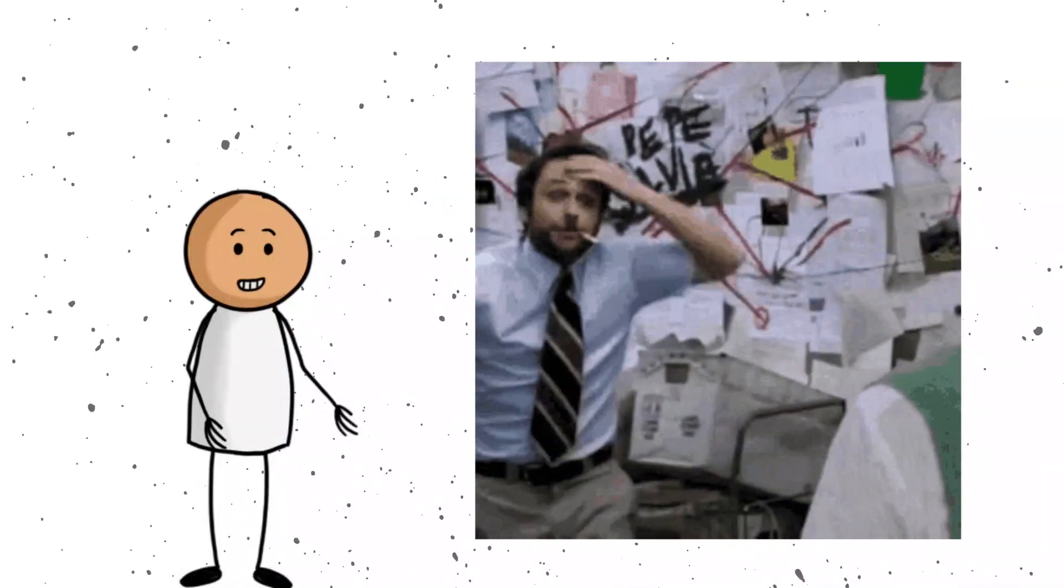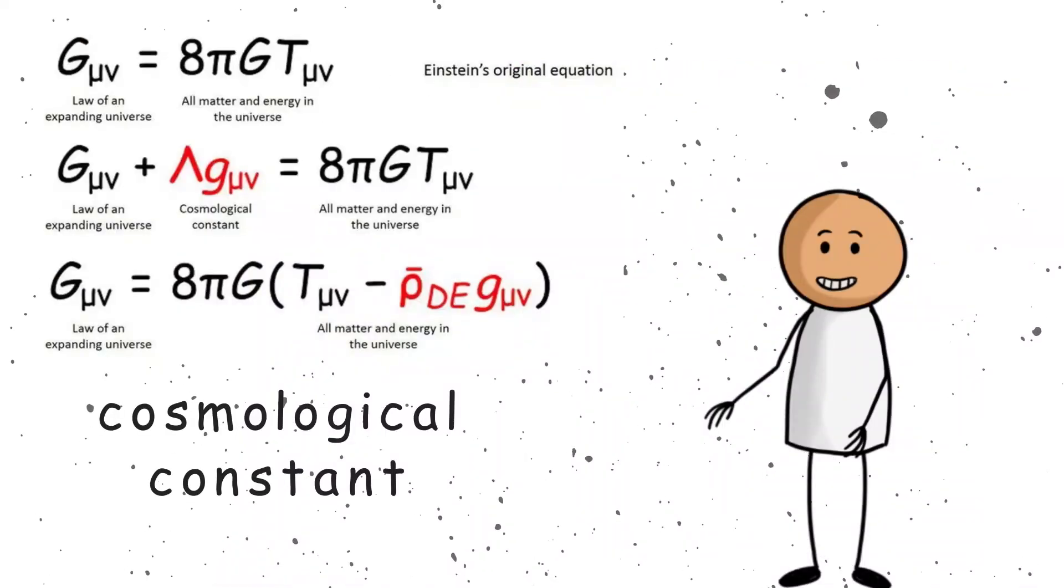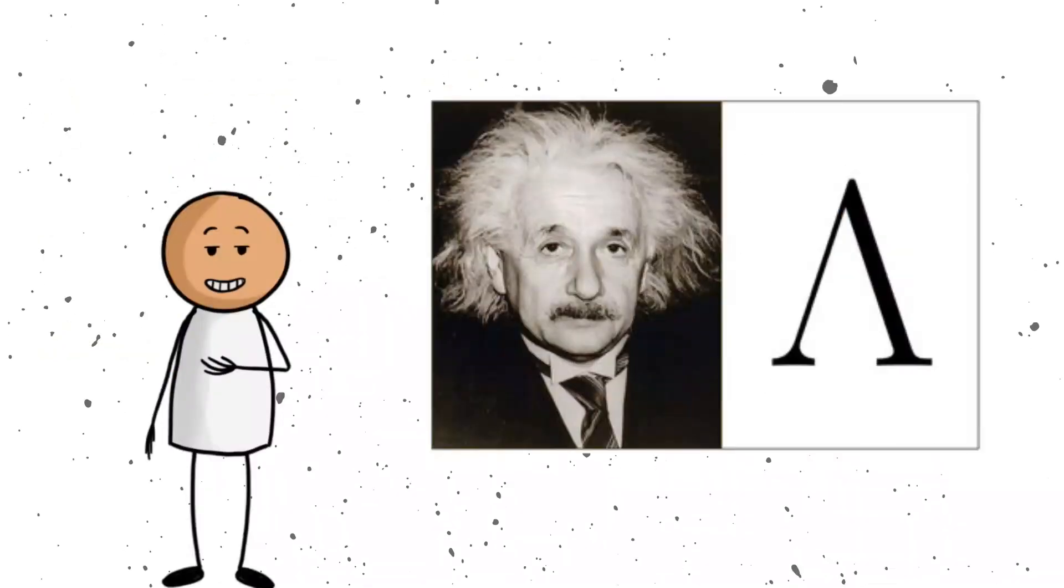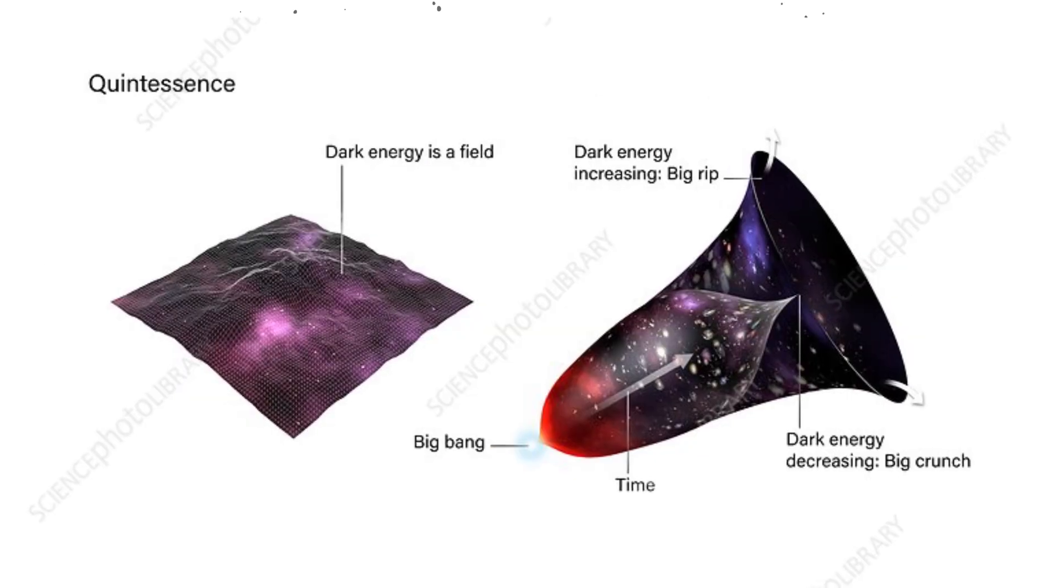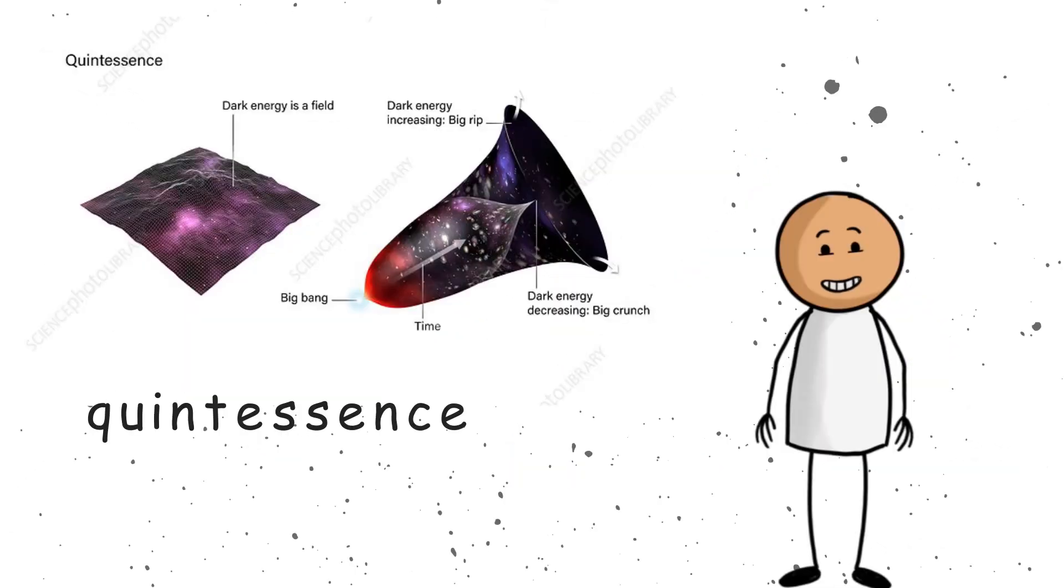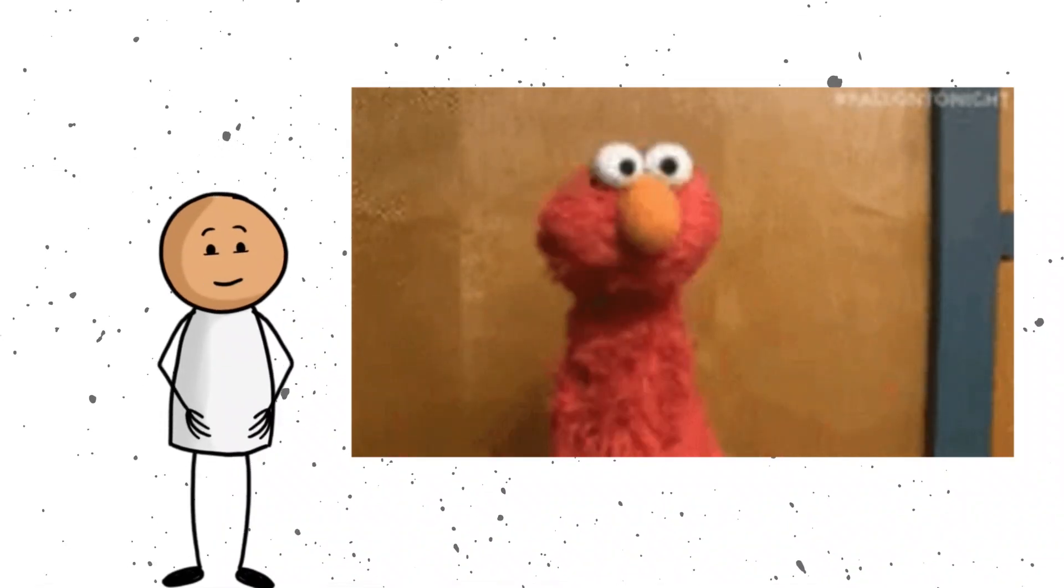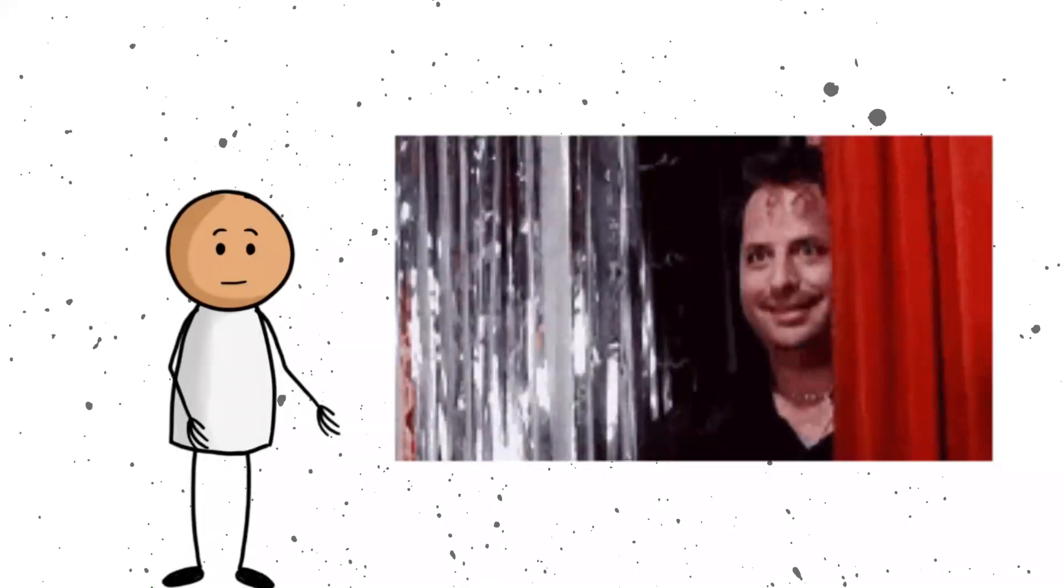Scientists have a few ideas about what dark energy might be. One guess is something called the cosmological constant, which is a fancy term Albert Einstein came up with. He thought it was a mistake, but it might just be the key to understanding dark energy. Another idea is that dark energy changes over time, something called quintessence, which sounds like a fancy magic spell from a wizard school. But here is the kicker. No one really knows what dark energy is or how it works. It is like the universe's biggest secret, wrapped in an enigma, hidden behind a cosmic curtain.